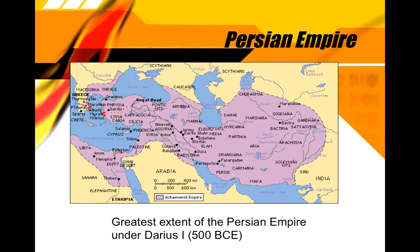Certainly an extensive empire — larger than any other empire we've discussed, and possibly the largest the world has ever known. Key capital cities included Pasargadae and Persepolis. Many of these major cities are now ruins, but there has been extensive archaeological excavation. The land of Persia corresponds to modern-day Iran. The Iranian people today are descendants of the Persians, just as many Iraqi people are descendants of the Babylonian people.